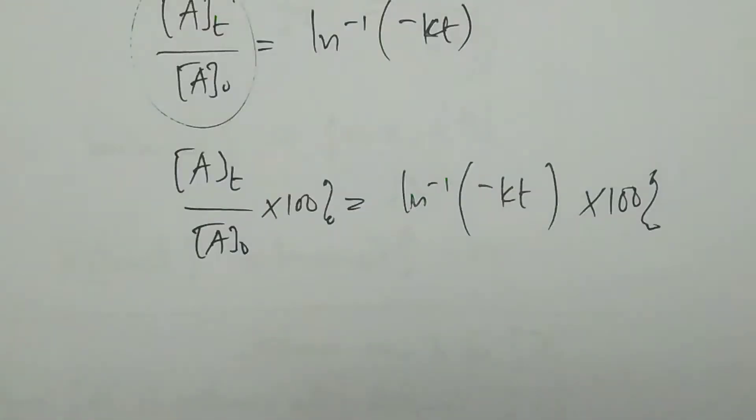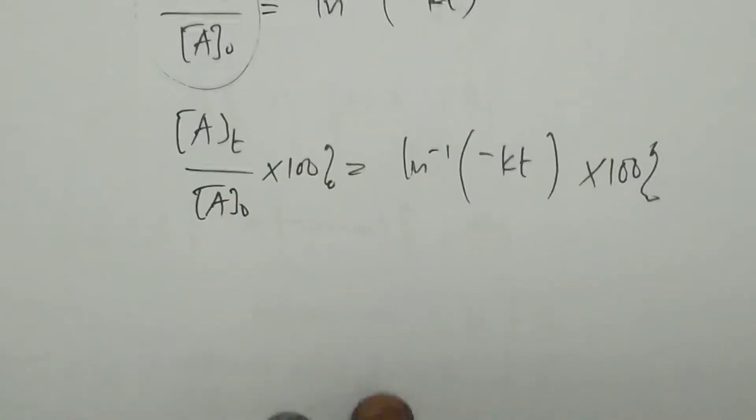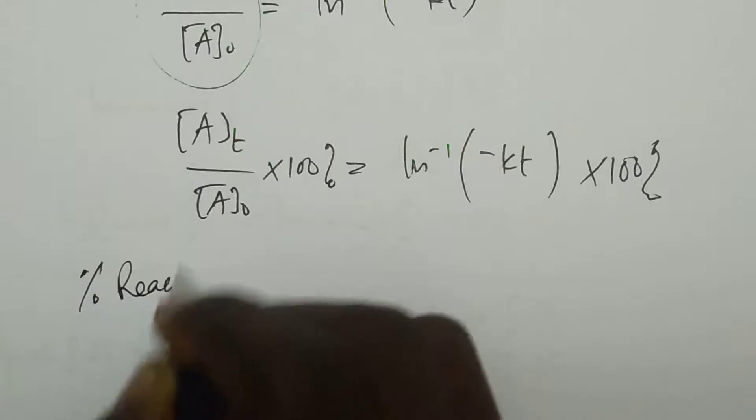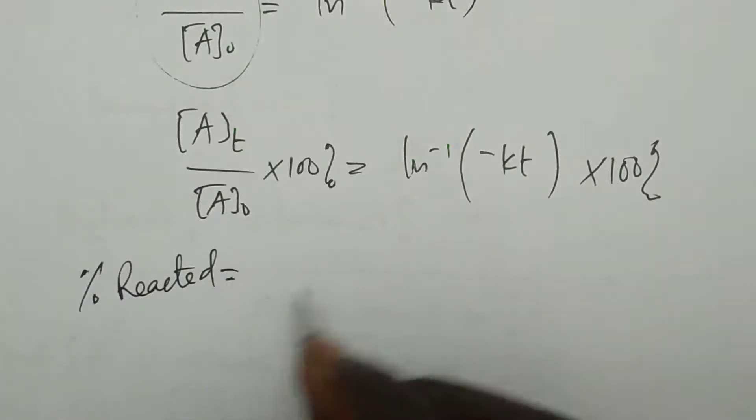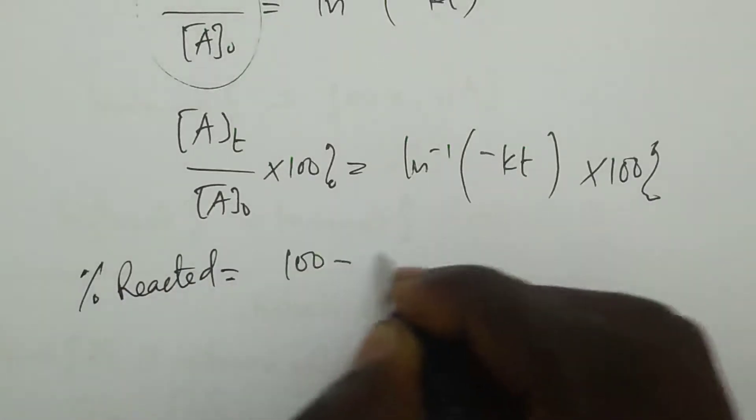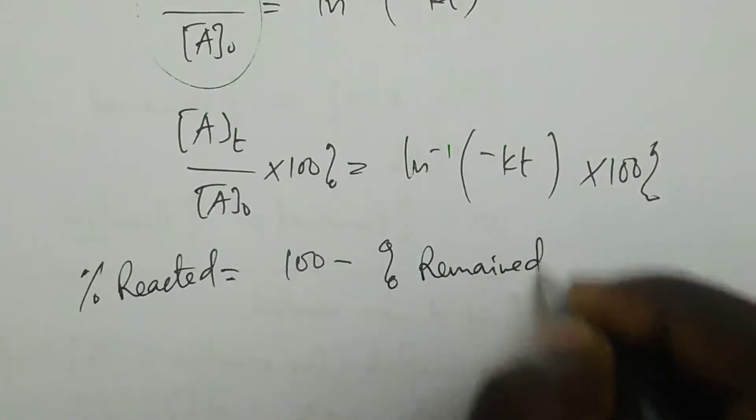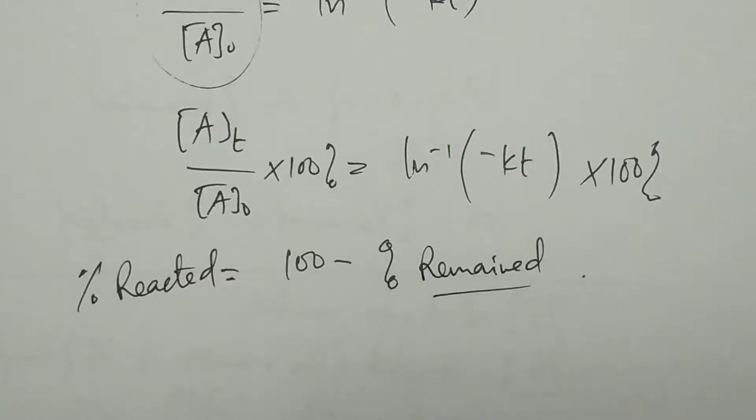If our question requires us to calculate the percentage reacted, we'll say percentage reacted equals 100 minus percentage remained. So, that's the way we calculate percentage remained and percentage reacted.